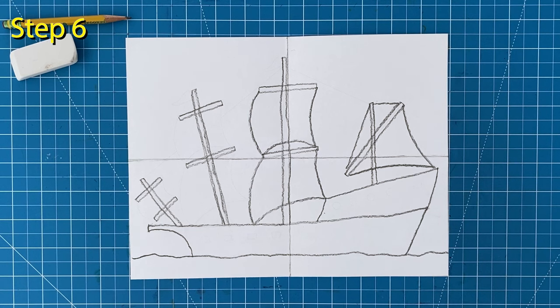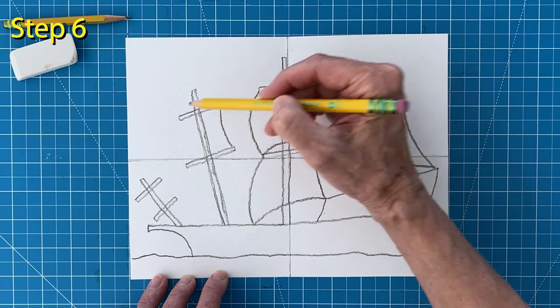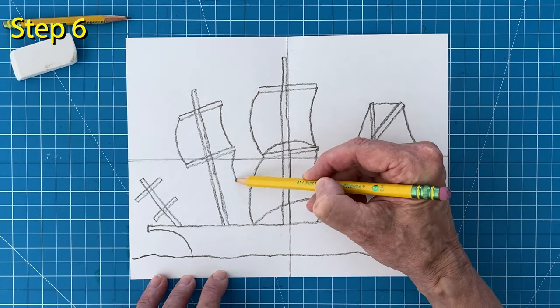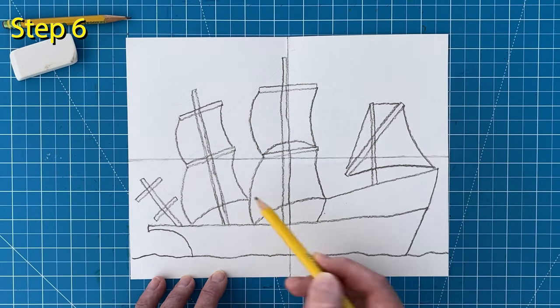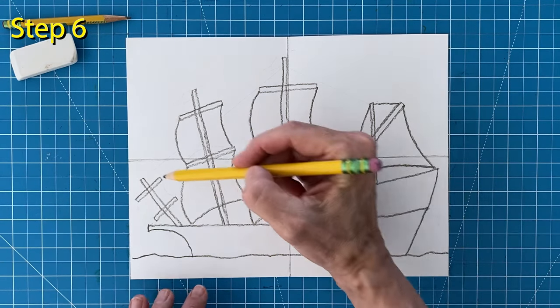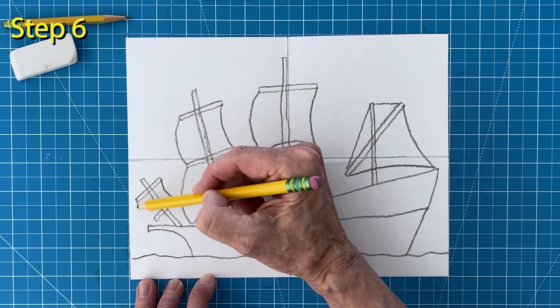The next pole gets two sails drawn the same way. They are just a little bit smaller. And then the smallest sail goes on the very left pole.